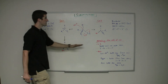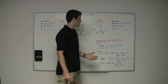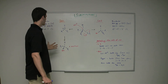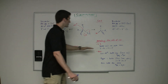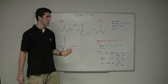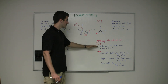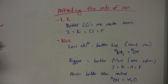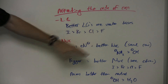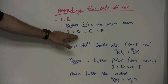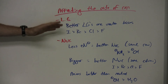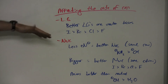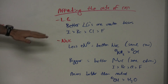Now let's look at what actually affects the rate of a substitution reaction. For the leaving group — and both SN2 and SN1 depend on the leaving group — better leaving groups are essentially weaker bases. Looking at the halogens: iodine is the weakest base, then bromine, then chlorine, then fluorine. So a leaving group of Br will have a faster rate of leaving than Cl, because Br is a weaker base and weaker bases are better leaving groups.